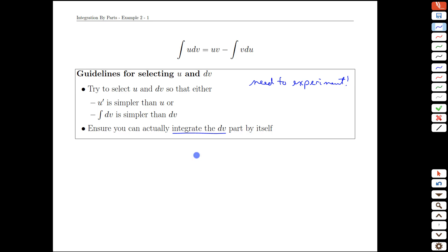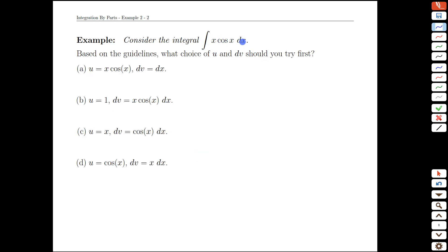Let's see this through a few examples. Consider the integral of x cos of x with respect to x. Based on those guidelines, what do you think a good choice, again for a starting point, knowing you might have to go back, what would be a good choice for u and dv? Think about that for a moment, pause the video, and then we'll check in.